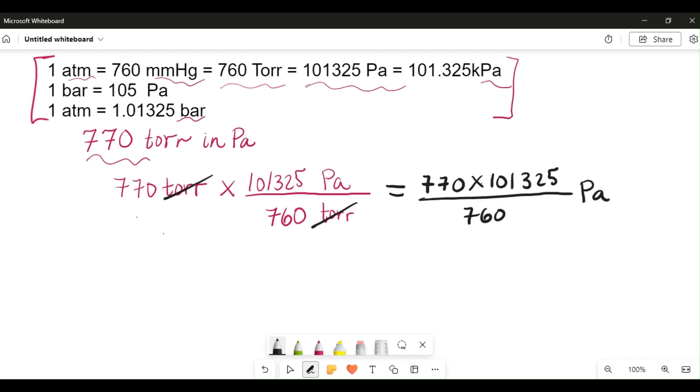So what you end up with is inputting this information in the calculator. We're going to get 102,658.224 Pascals. And when we express this in three significant figures, we're going to have approximately 103,000 Pascals, which is the answer to this particular question.